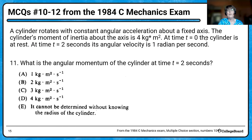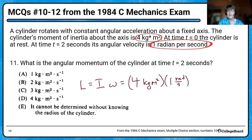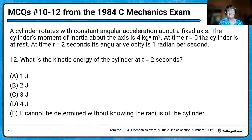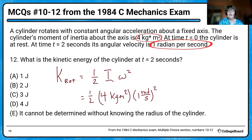Then we want to find the angular momentum of the cylinder at time equals two. Angular momentum is I omega. We're given I and omega. After two seconds, you substitute the values in and find that D is your answer. The last part asks how much kinetic energy the cylinder will have at two seconds. Rotational kinetic energy is one-half I omega squared. Plugging in, you get two kilogram meters squared per second squared — equivalent to two joules of energy.